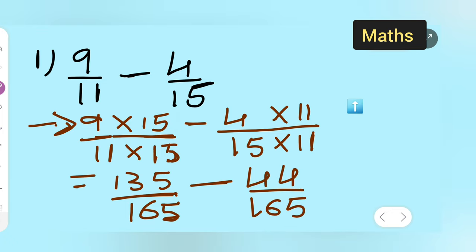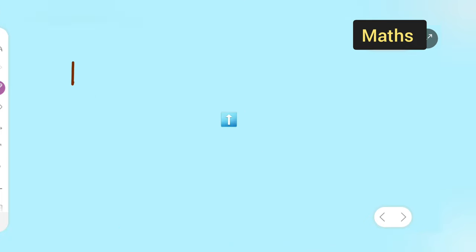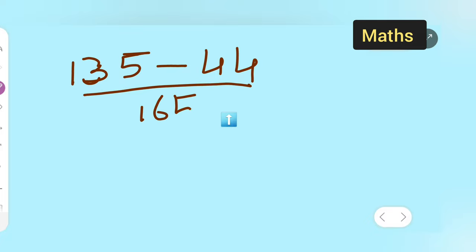So basically 135 minus 44 upon 165 because 165 is common. Both denominators are 165. So now this is equal to what? What answer are you going to get? 135 minus 44 is going to give you 91 upon 165.